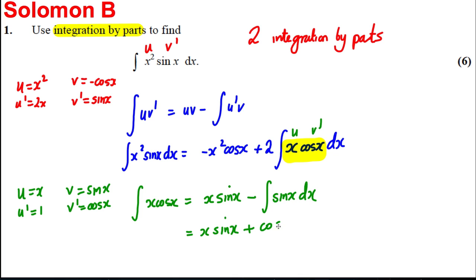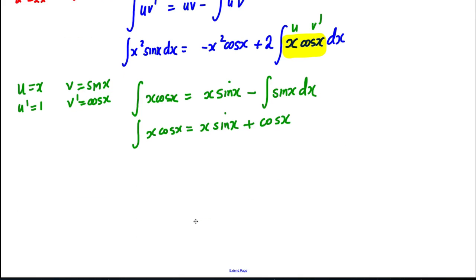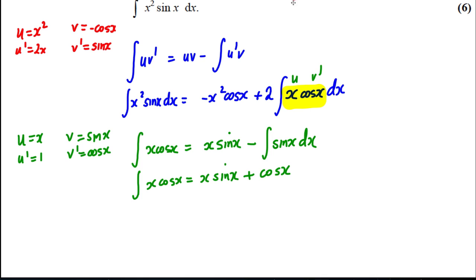Which is going to be x sine x. The integral of sine x is negative cos x. With this negative, v plus cos x. Okay, so this is this integral here. Now what we're going to have to do is we're going to have to combine the answers.